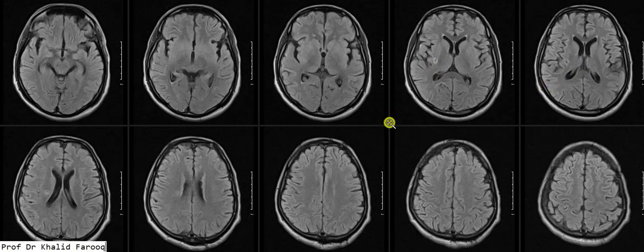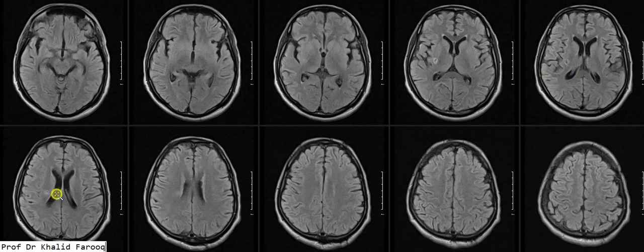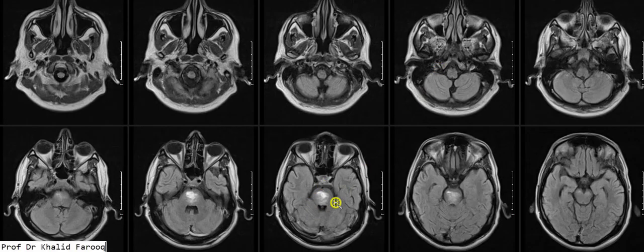The ischemic changes extend into the right periventricular region, while the remaining brain is unremarkable. So this is a case where we have seen old ischemic changes in the right periventricular region including the posterior portion of the right basal ganglia, and pontine hemorrhage. Thank you very much. Assalamu alaikum wa rahmatullah.